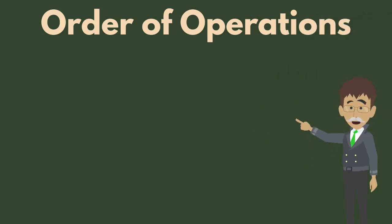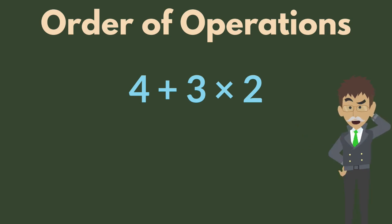Imagine you have a mathematical expression like 4 plus 3 times 2. How do you know which operation to perform first? To solve this puzzle, we follow the order of operations.